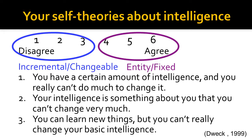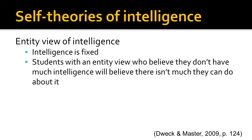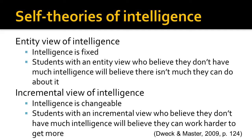Now I will explain what these views of intelligence mean and why they matter for students according to research conducted by Carol Dweck. Self-theories are students' beliefs about the nature of their intelligence. If you have an entity view of intelligence, then you believe that intelligence is fixed. Students with an entity view, who believe they don't have much intelligence, will believe there isn't much they can do about it. If you have an incremental view of intelligence, then you believe that intelligence is changeable. Students with an incremental view, who believe they don't have much intelligence, will believe they can work harder to get more.